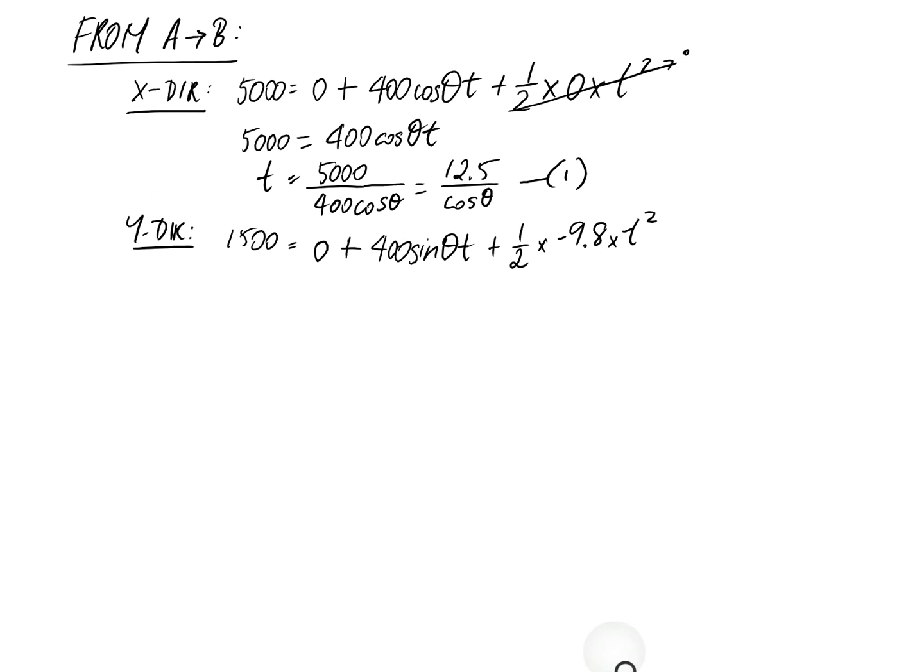Making this a little simpler, it becomes 1500 equals 400 sin theta T, and this can be simplified to 4.9 T squared. I'll call it equation two.